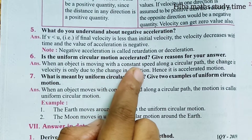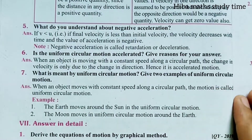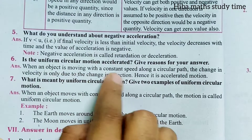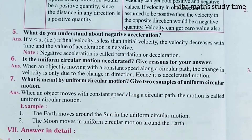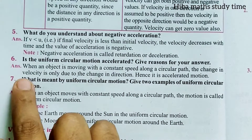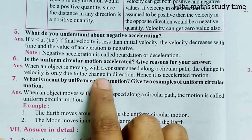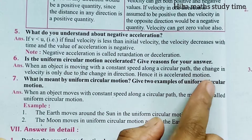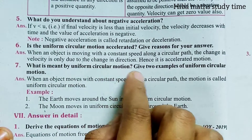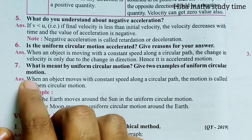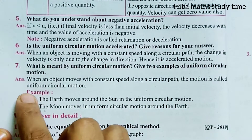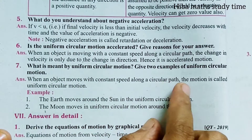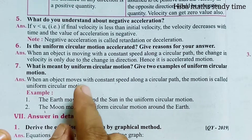Is uniform circular motion accelerated? Give a reason. When an object is moving with a constant speed along a circular path, the change in velocity is only a change in direction; hence it is accelerated motion. Uniform circular motion is when an object moves with constant speed along a circular path.